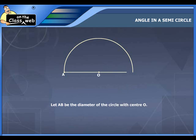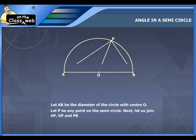Let P be any point on the semi-circle. Next, let us join AP, OP and BP. We have OA equals OB equals OP which equals the radius of the semi-circle.